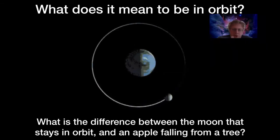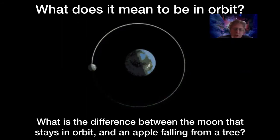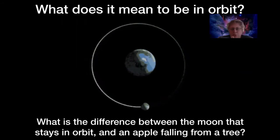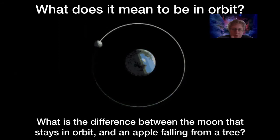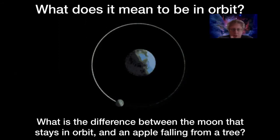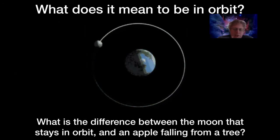To start talking about dark matter, I first want to ask a different question: what does it mean to be in orbit? What is the difference between the moon, which is held to the earth by gravity and stays in orbit, and an apple that is held to earth by gravity but falls and doesn't stay in orbit — it just crashes into the earth and stops.